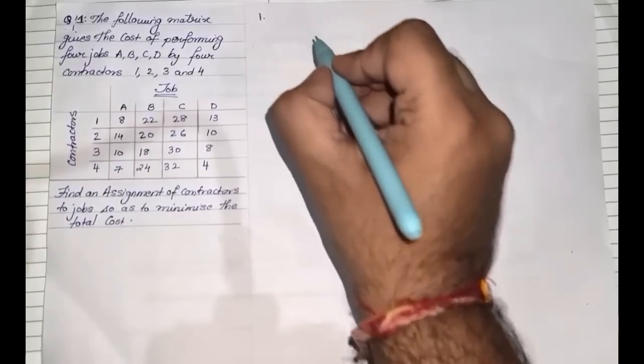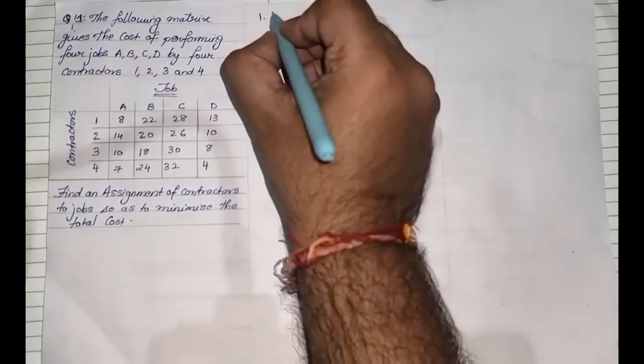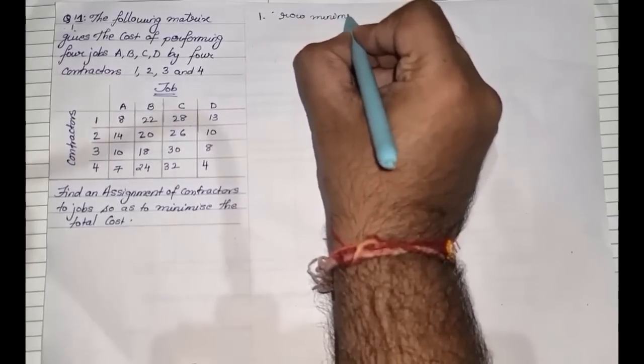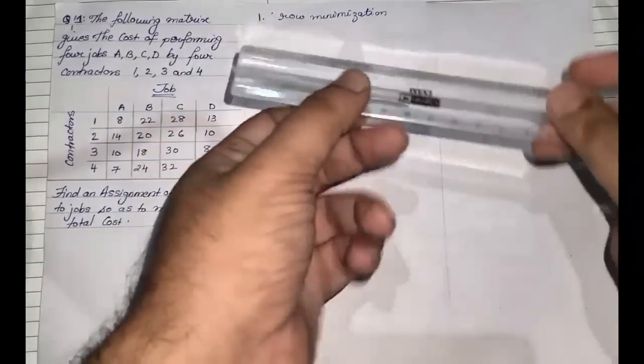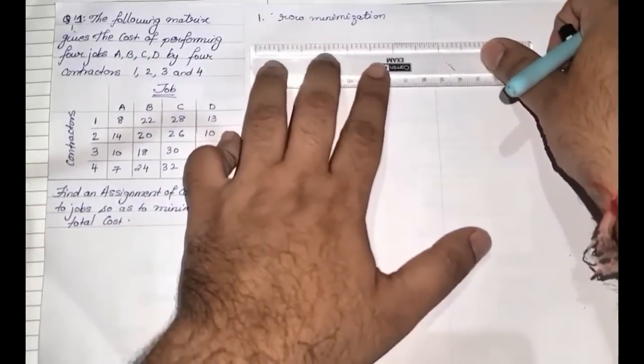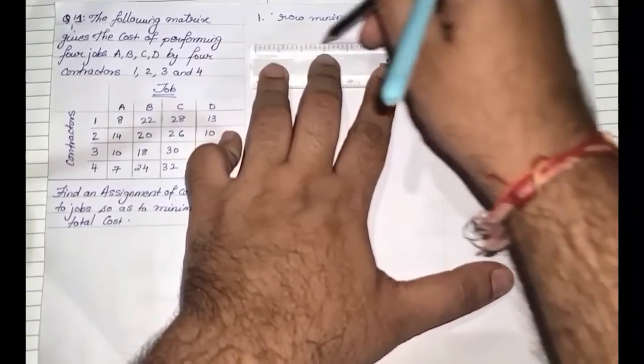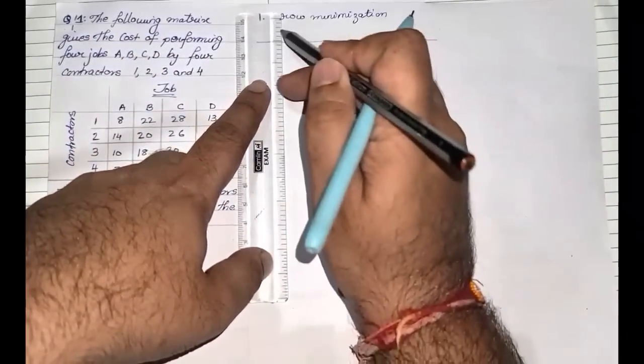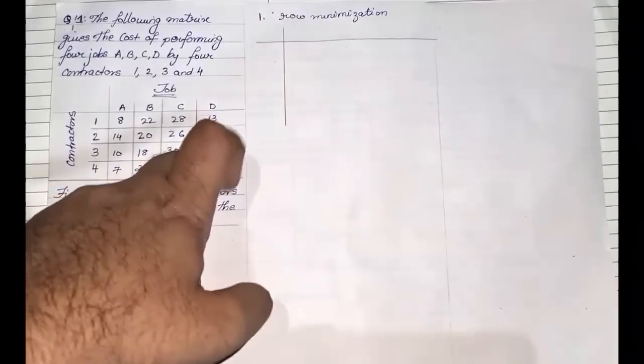Keep in mind all the steps I'm going to say. Now let's start with step number one. The first step will be based on finding something called row minimization. This will be your first table — Table 1 — where we are going to find row minimization. What we are going to do is replicate the table which we have been given, with headers for jobs and contractors.